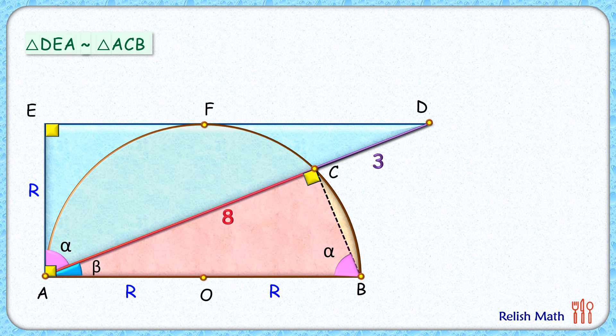As triangles are similar to each other, thus ratio of sides will be equal. We can say DE upon DA will be equal to AC upon AB. Putting the values here, DE is unknown but DA is 11 cm. Same way, AC is 8 cm and AB length, that is diameter, or 2R.